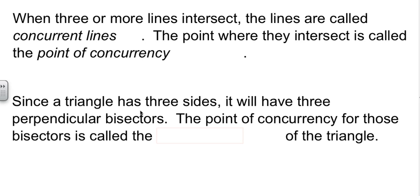Since we know a triangle has three sides, logic would tell us that means it's going to have three perpendicular bisectors. Well, those three lines are all going to intersect somewhere.